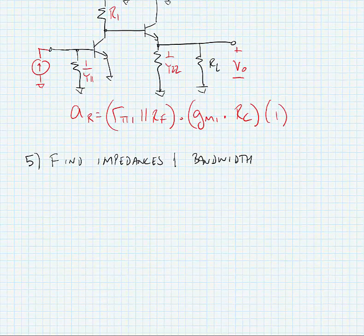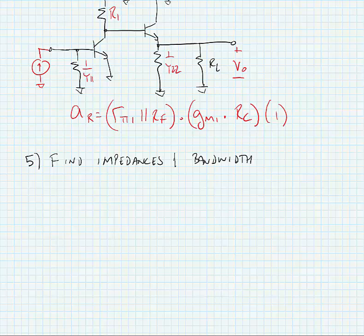Now, if we wanted to find the effect of the feedback on the closed loop circuit, we know that the closed loop gain is equal to the open loop gain divided by 1 plus the open loop gain times beta, and this is approximately equal to 1 over beta if the open loop gain is large. Of course, we found beta in a prior step.